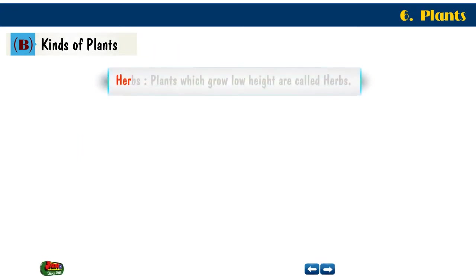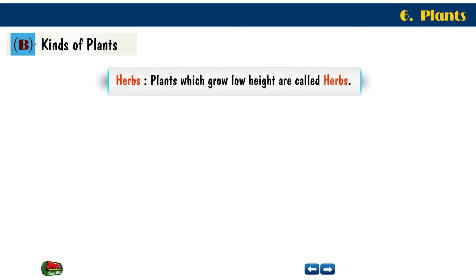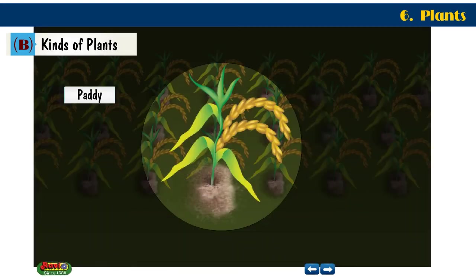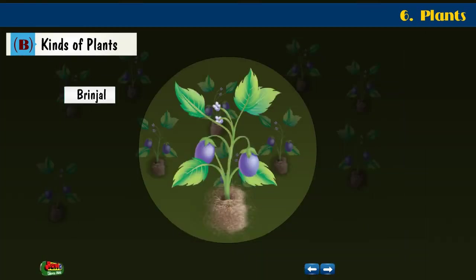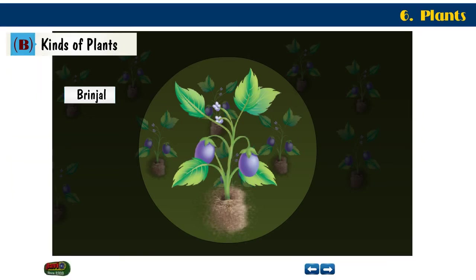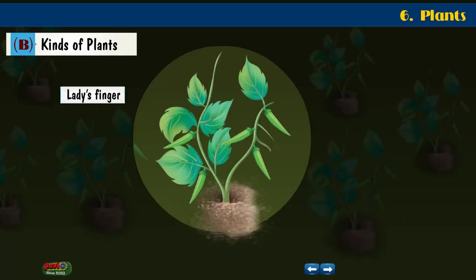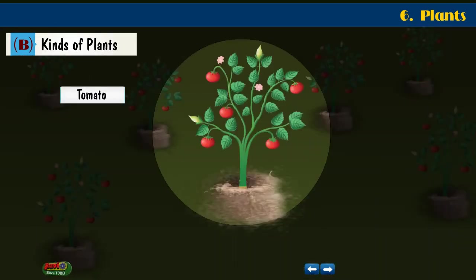Herbs. Plants which grow at low height are called herbs. Examples include paddy, brinjal, ladies fingers, and tomato.